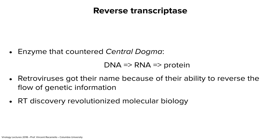This enzyme revolutionized molecular biology in many fields. You can take any RNA, incubate it with this enzyme, and make a DNA copy, then clone that DNA in a plasmid and get large quantities for study. Any therapeutic protein that relies on recombinant DNA depends on reverse transcriptase. Many other applications include RT-PCR: you extract RNA, convert it to DNA, and do a PCR reaction — essential for detection and research. That's why these individuals received the Nobel Prize for discovering it.